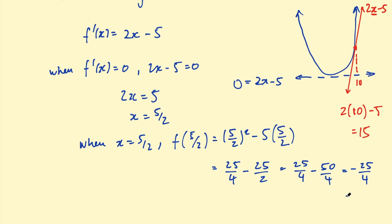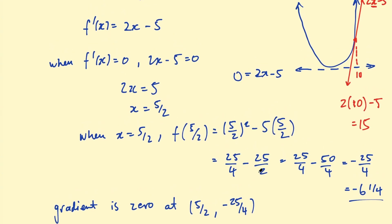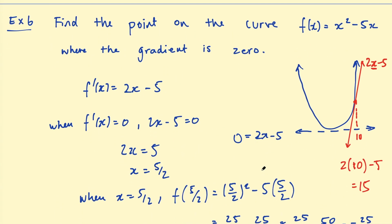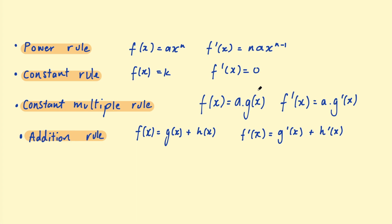3 on 2 minus 1 is just a half. So that's going to be negative 6 and a quarter. Now we have our coordinates: the gradient is zero at the point 5 on 2, negative 25 on 4. That was an example with some context — understanding what finding the derivative means in terms of the graph of a function. So there were some examples using the power rule, the constant rule, the constant multiple rule, and the addition rule. I hope you found that useful — go away and do some more examples to really get to know these rules. Leave a like if you appreciated this video and I'll see you in the next one.